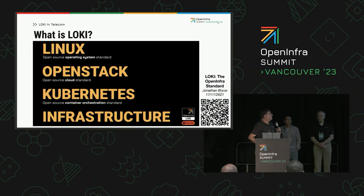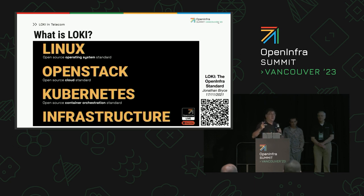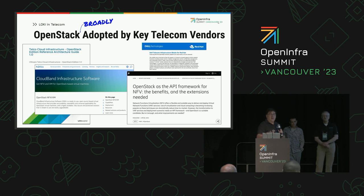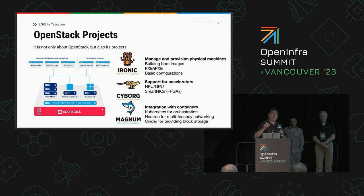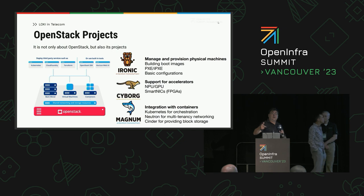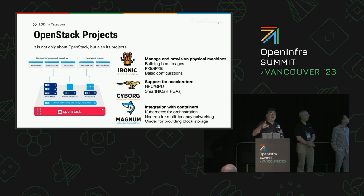Let's talk about Loki in telecoms. Loki is a cloud stack comprised of Linux, OpenStack, and Kubernetes. OpenStack is the central piece and has been broadly adopted by vendors — there are operators deploying OpenStack with products that support telecom infrastructure. Key community projects directly connected to telecom requirements include: Ironic, which allows setup and deployment on bare metal; Cyborg, which manages the acceleration layer; and Magnum, which drives integration with Kubernetes.